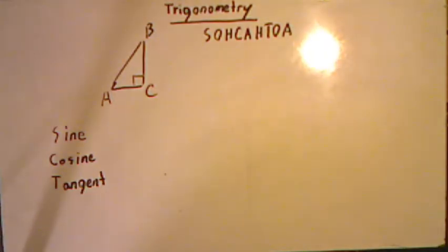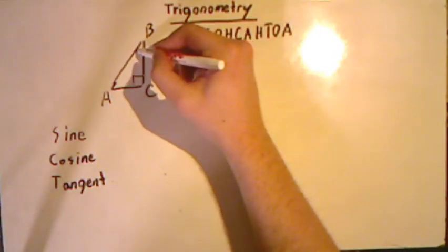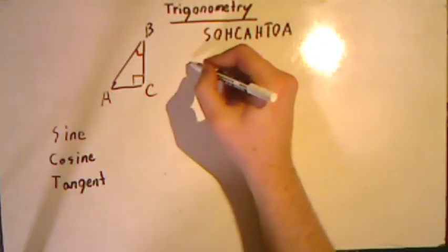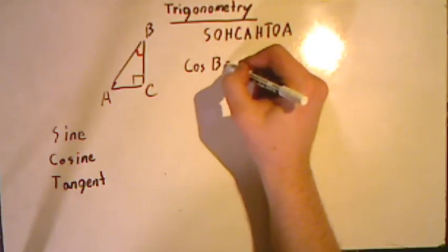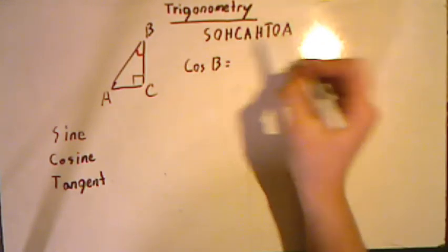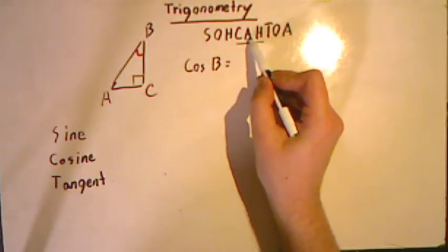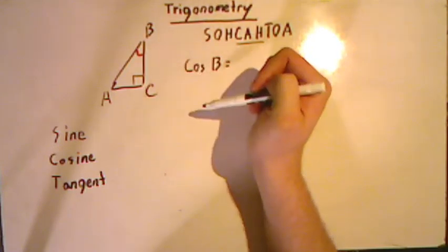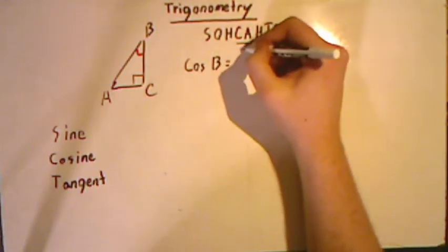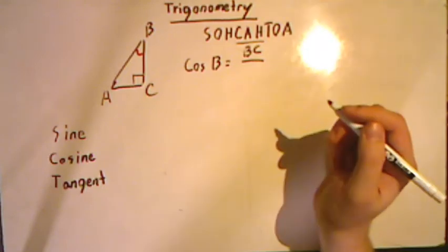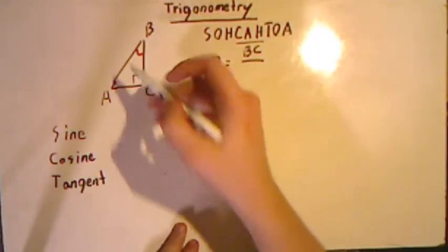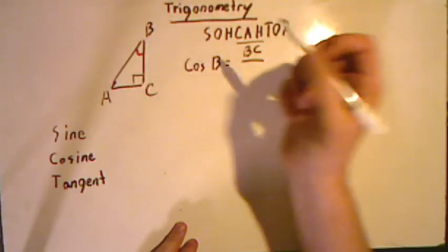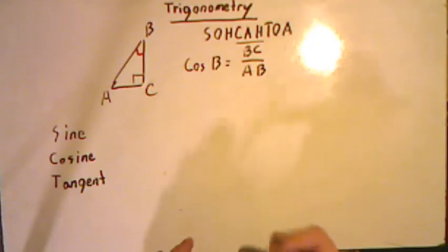So if you had been asked to find, say, the cosine of angle B, we'd write down that we want the cosine of B. We know that cosine, based on our acronym here, is the adjacent side over the hypotenuse. So we take a look to find what side is closest to angle B, and that would be BC. And what is the hypotenuse of this right triangle? That is the longest side opposite the right angle, which is AB. And we'd have our cosine.